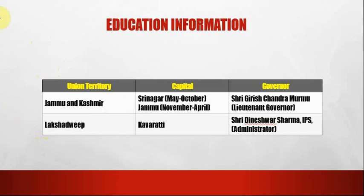The next union territory is Jammu & Kashmir. The capital of Jammu & Kashmir is Srinagar. The Lieutenant Governor is Sri Girish Chandra Murmu. The next union territory is Lakshadweep. The capital of Lakshadweep is Kavaratti. The administrator is Sri Dineshwar Sharma (IPS).